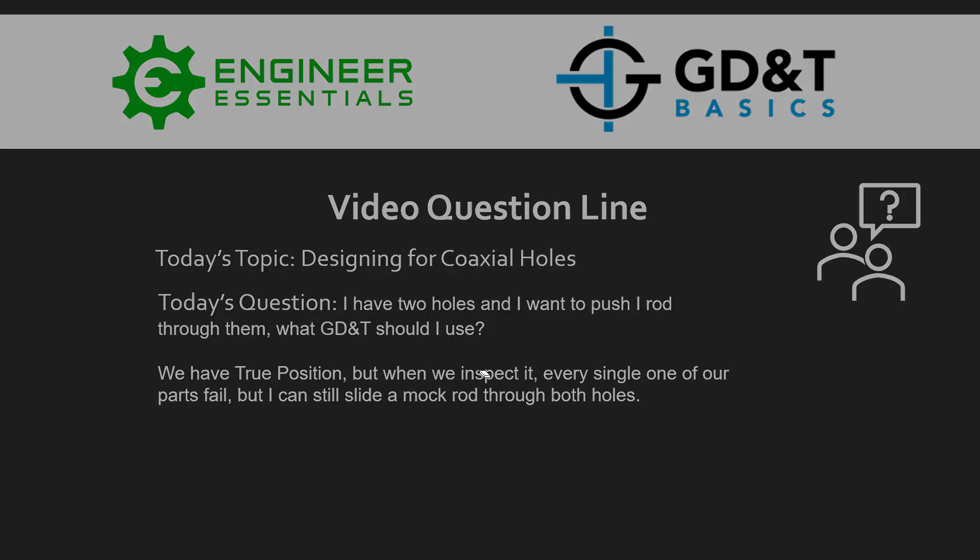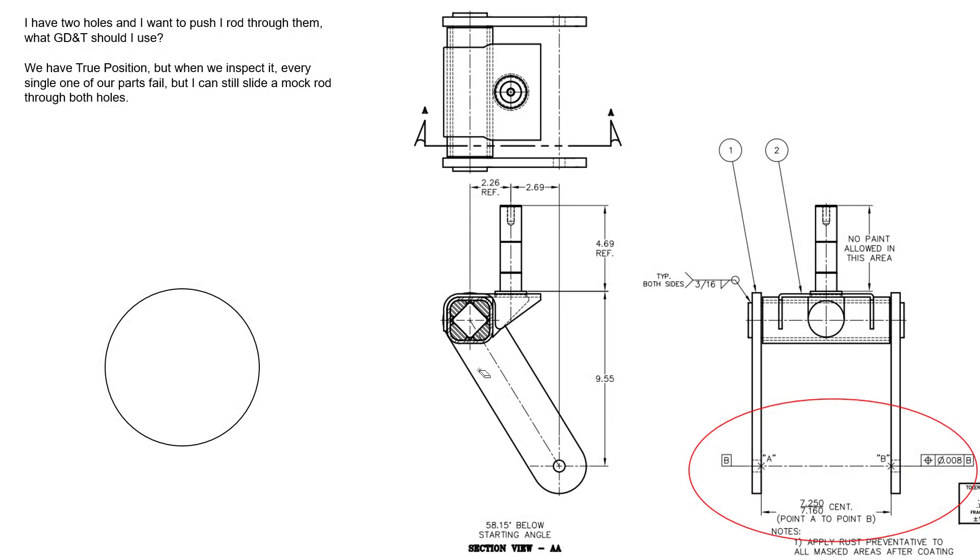So let's go ahead and take a look at the example drawing that was sent to us to analyze here. We can see a simple weldment. The simple weldment is establishing this hole on the left as datum feature B. Now, we can't necessarily attach the datum feature symbol directly to the axis like we see here, but the intention is understood that we can apply the datum axis to this hole. So the axis of that hole is established as datum axis B.